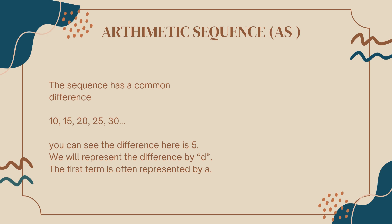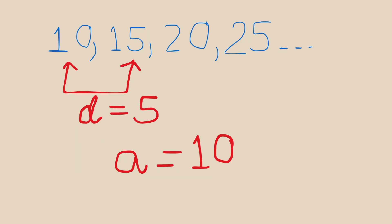Arithmetic sequence has a common difference. Here is an example: our sequence begins with 10, then 15, then 20, then 25, and it keeps going. The difference here is 5 — 15 minus 10 equals 5, 20 minus 15 equals 5, 25 minus 20 equals 5. So the common difference is 5. We represent the common difference by D and the first term by A. In this sequence, D equals 5 and A equals 10.